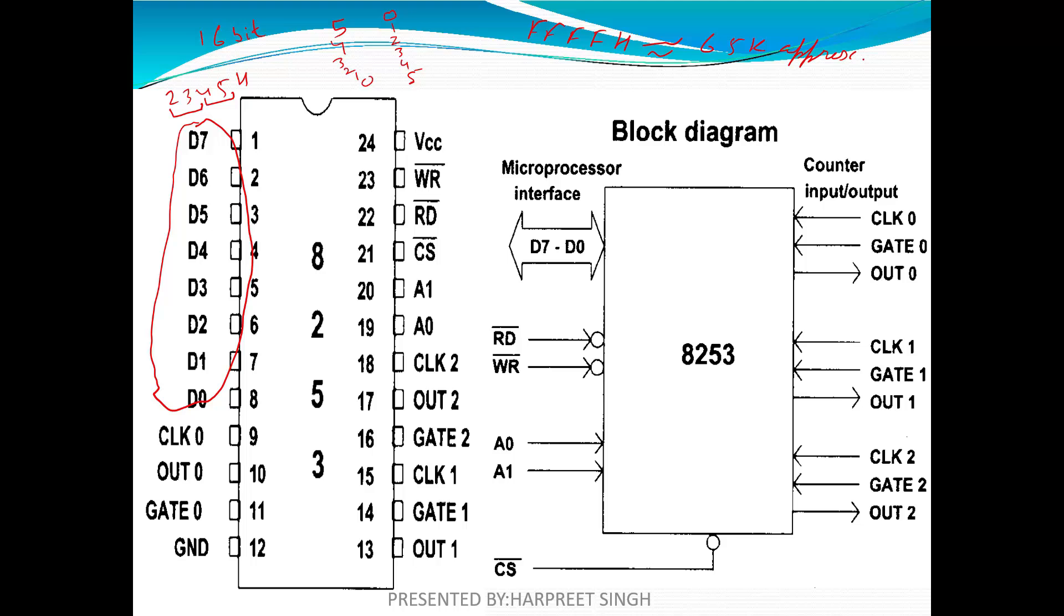The 12th pin is ground pin. The 24th pin is voltage to operate the 8253/8254 timer. The 23rd pin is write then read, which we have already discussed in 8085 as well as 8086 processor. Next is chip select, which is used to activate the 8253 chip.